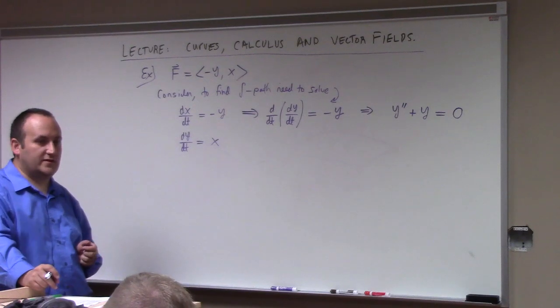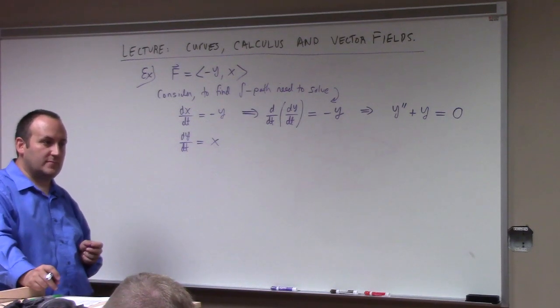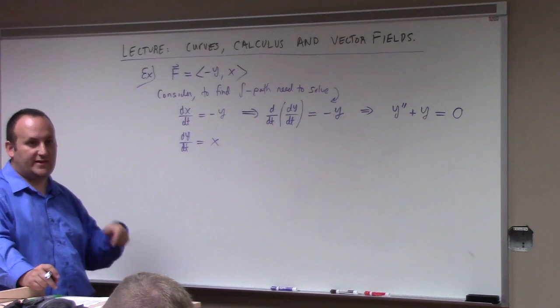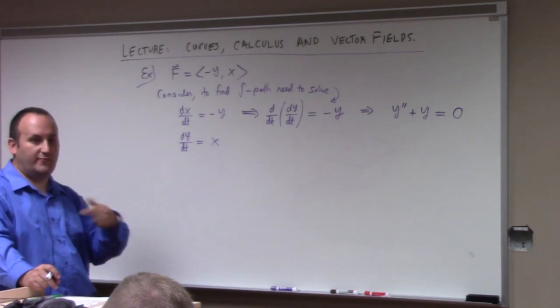Cosine. Differentiate cosine two times. What do you got? Differentiate it once, get minus sine. Differentiate that again, you get minus cosine. We have a winner. Cosine works.